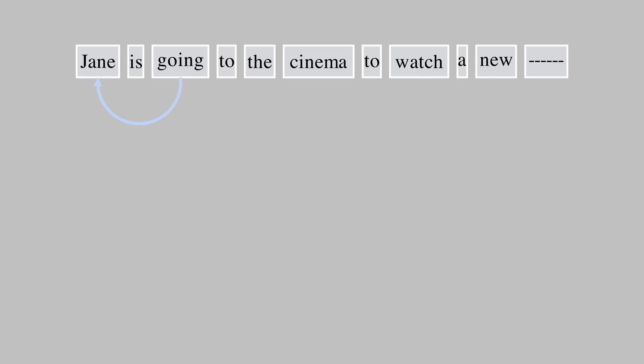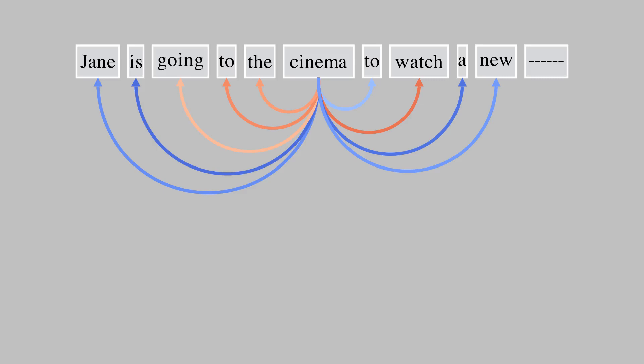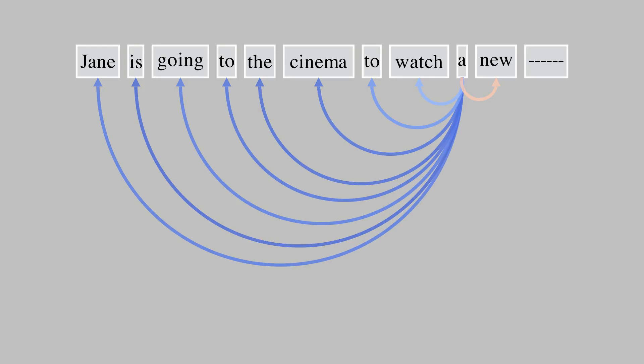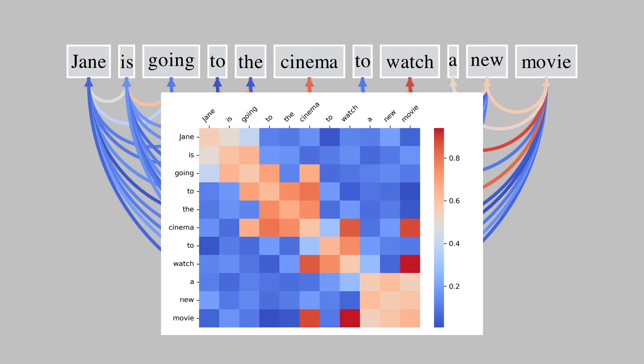Now let's see these relationships in a graph. I am showing them using arrows between each pair of words. Every word in the sentence has to attend to other words with a different degree — in other words, similarity of those words is based on the context. For example, the word 'cinema' and the word 'watch' have a stronger relationship, which can lead to predicting the word 'movie' in the blank space. The goal of an attention model is to capture the relationship between the words in the sequence that represents the context similarity. We can represent context similarity using a matrix where each row and each column corresponds to individual words of the sentence.